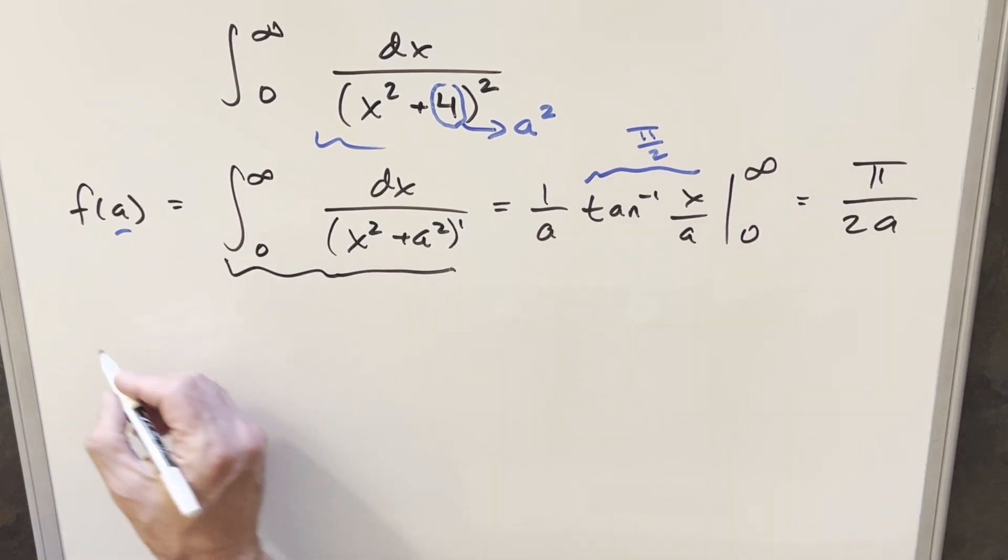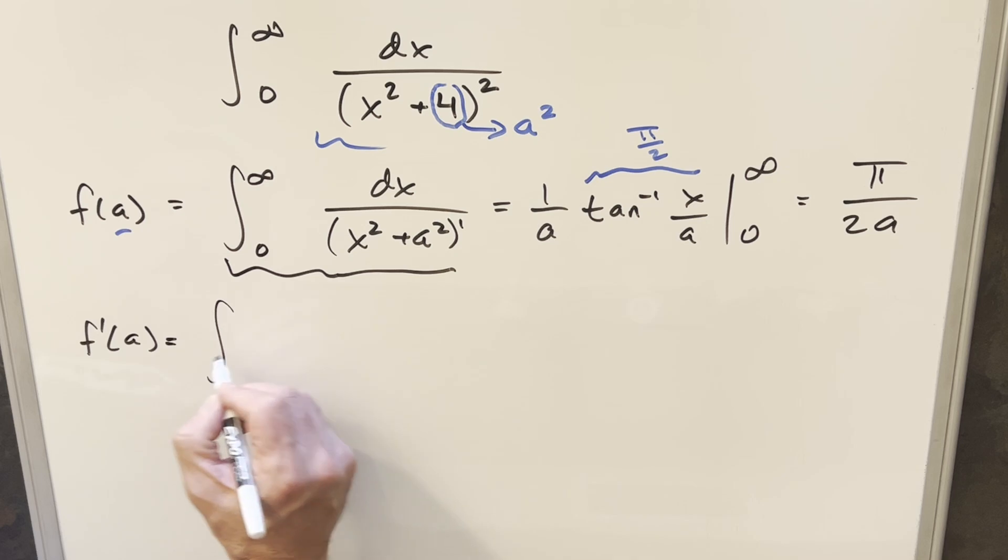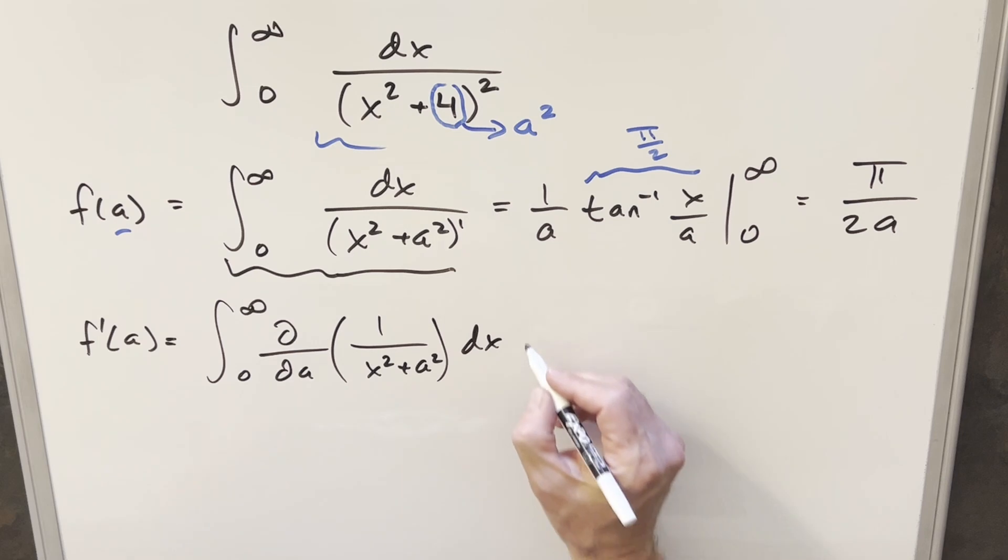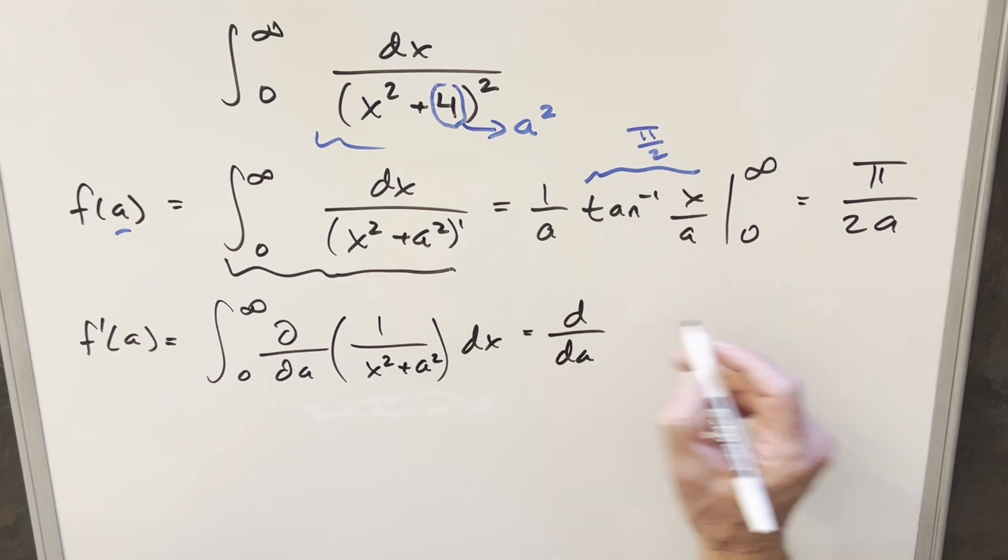And so now for our next step, what we're going to do is we want to get our derivative. We want our f prime of a value. So we're going to want to differentiate with respect to a. Well, what I'm going to do is, instead of differentiating out here, we're going to differentiate inside the integral as a partial. But we're also going to do the same thing on the right side of the equation. So we're going to differentiate with respect to a of this thing, pi over 2a.